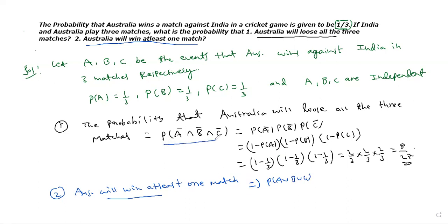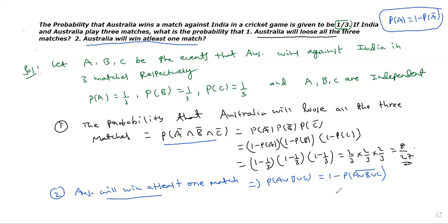Already we got A bar intersection. P of A union B union C gives at least one. This is equal to 1 minus P of A union B union C whole bar. Using the standard result P of A equals 1 minus P of A bar, this becomes 1 minus P of A bar intersection B bar intersection C bar — which we already calculated in the first case.